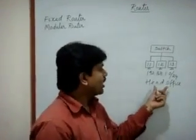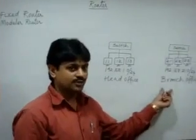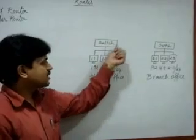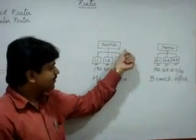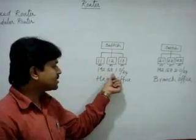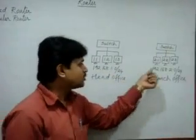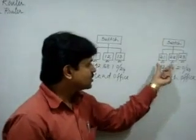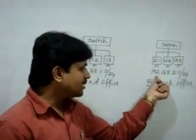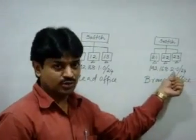For example, we have one head office and branch office. In the head office, all pieces are connected to a switch — this LAN is in the 192.168.1.0 network. Similarly, in the branch office, all pieces are connected to a switch LAN, and that LAN is in the 192.168.2.0 network.